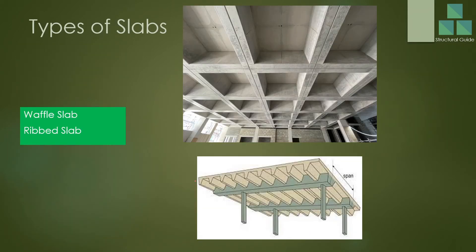Waffle slabs are similar but have some differences. In a waffle slab, you have a slab with beams running all around it in a small square or rectangular panel arrangement, supported by those beams. As per architectural requirements, when higher spans without intermediate columns are needed, these slabs are constructed.